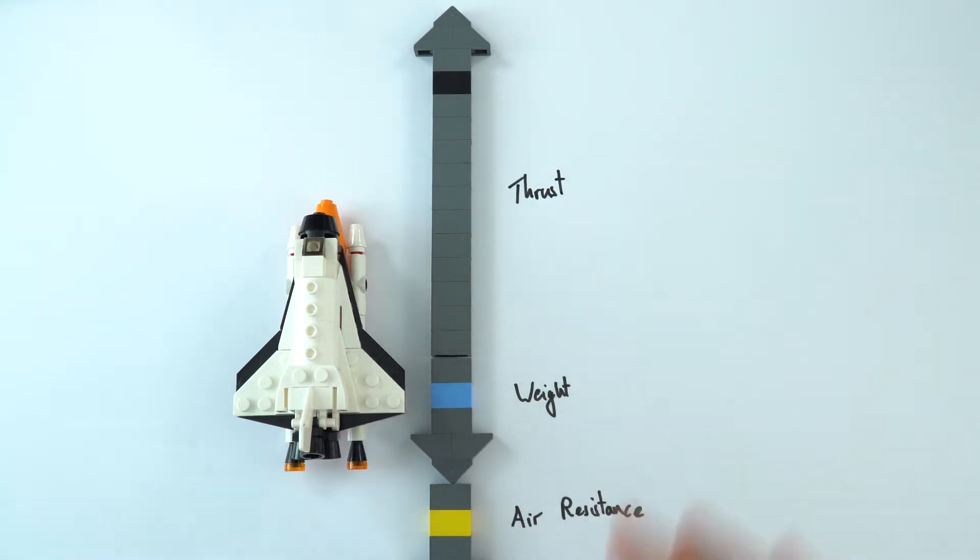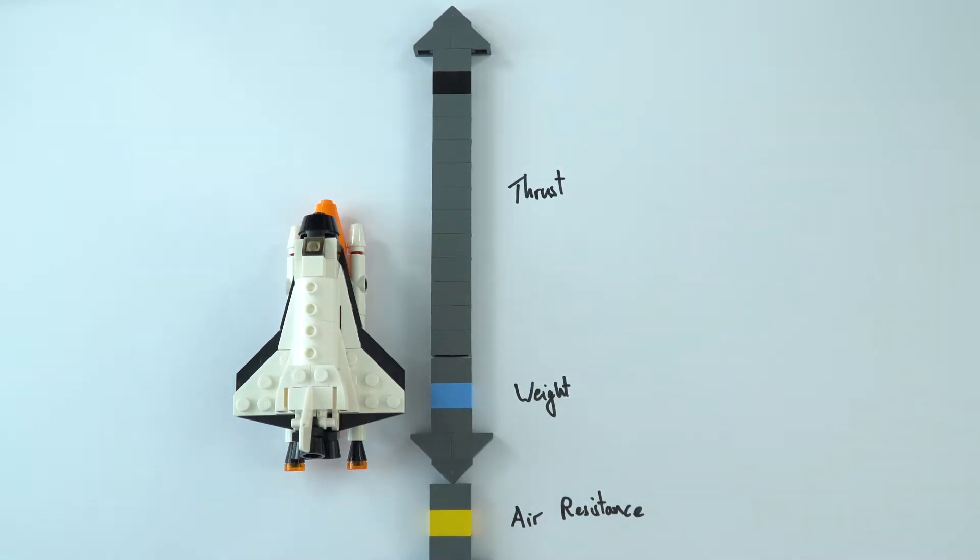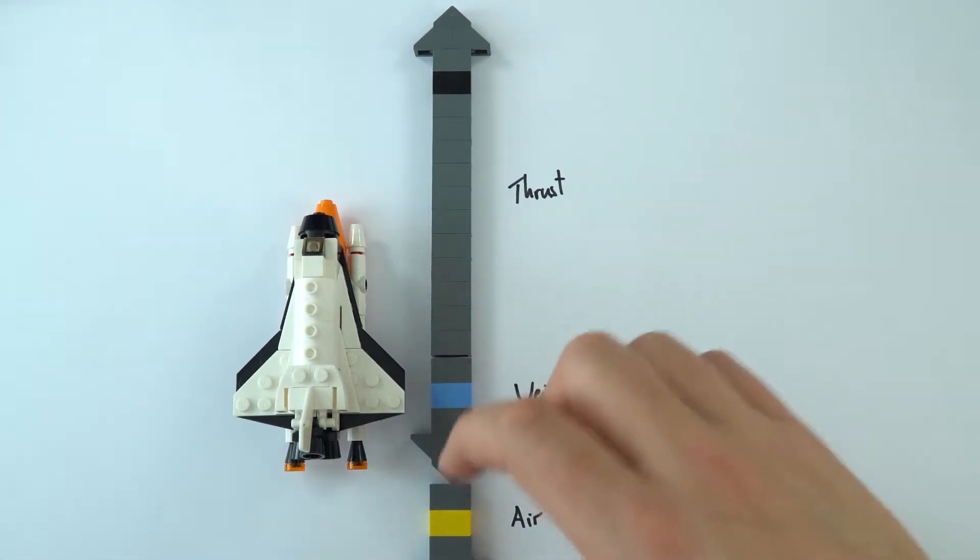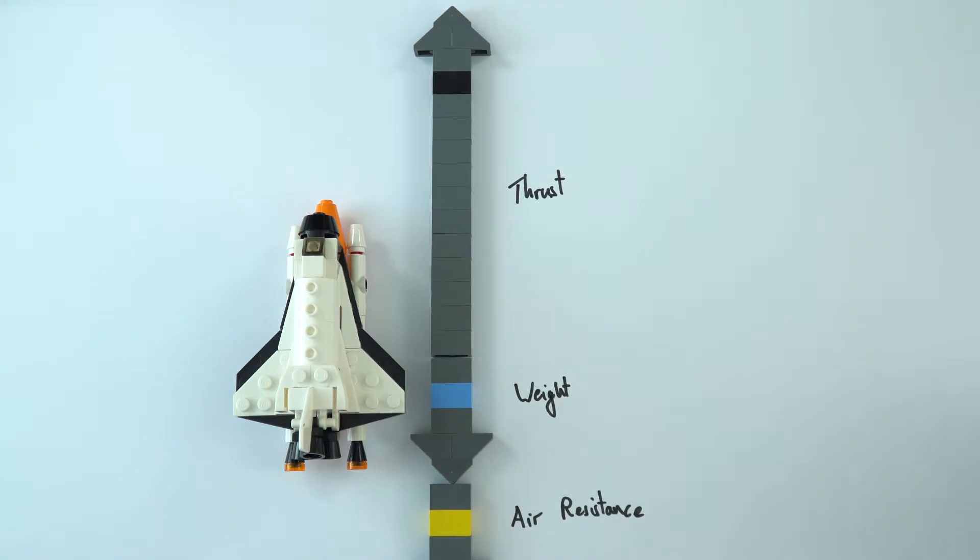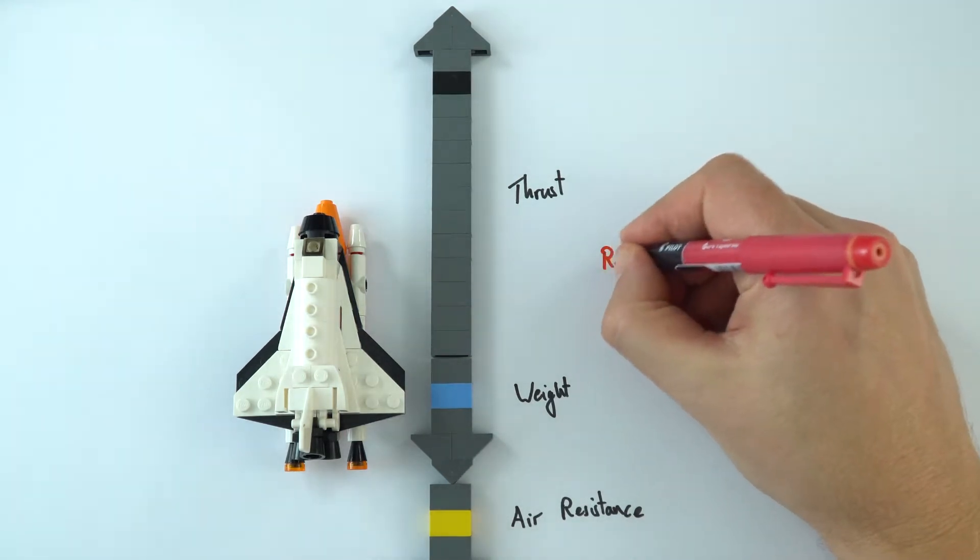But when you start to add more and more forces to one thing, it starts to get a little bit more complicated. And actually what we can do is we can replace all of these different force arrows with one equivalent arrow that basically shows the result of all of these forces. And we call this the resultant force. And I'm just going to do this in red to make that quite clear. So what would this resultant force be?